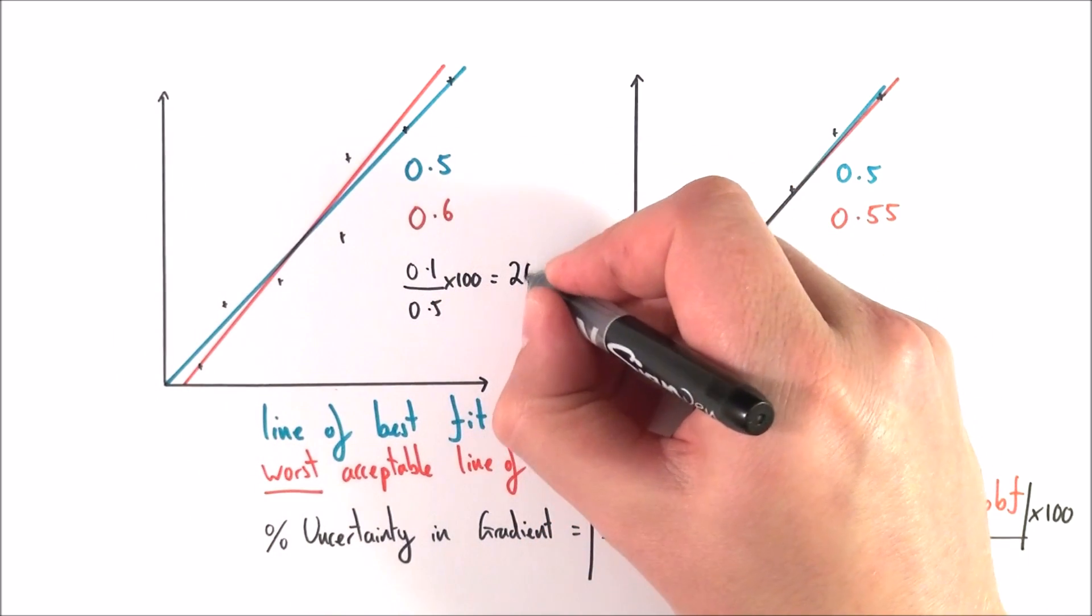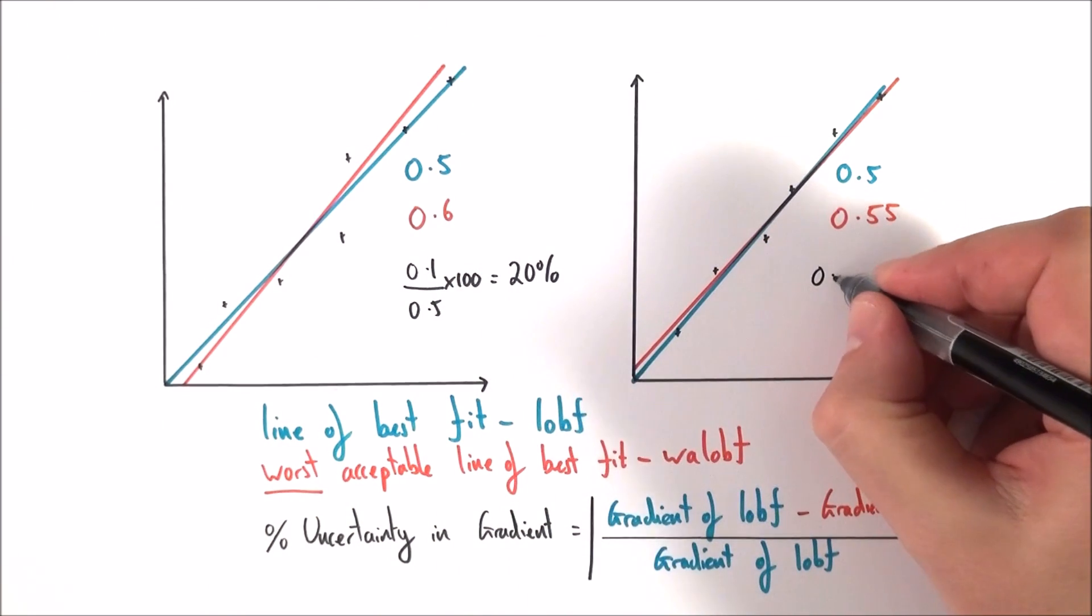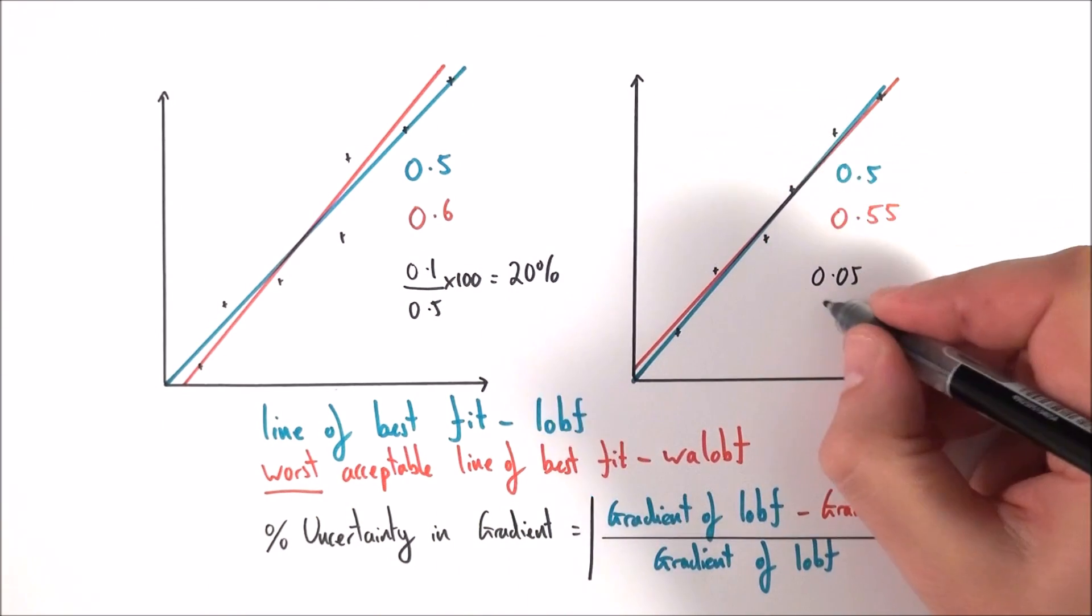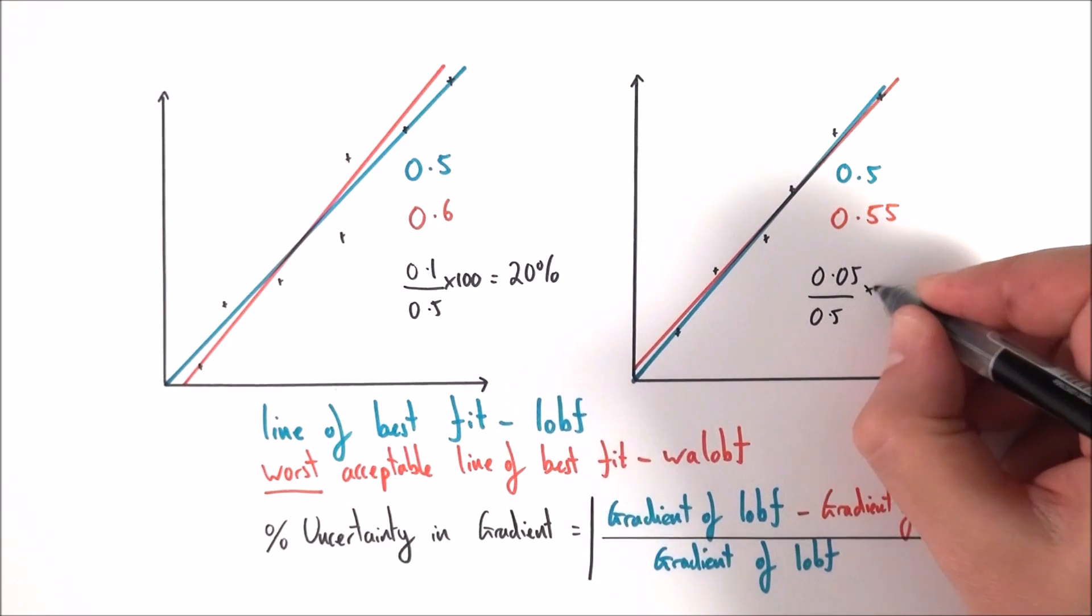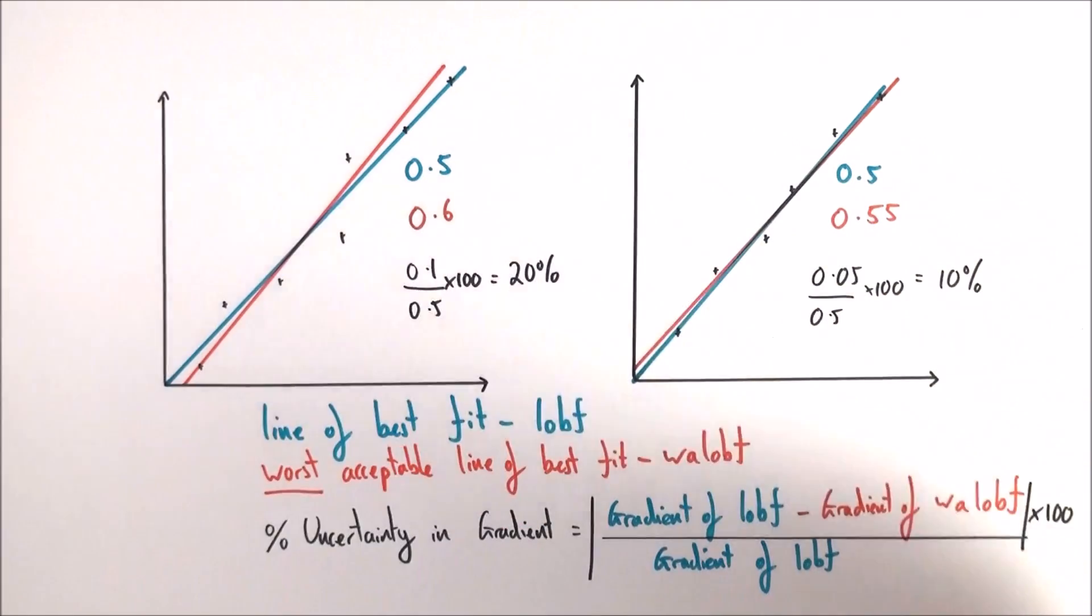In our gradient here, the value is going to be 0.05, which is the difference between the two, over 0.5 times 100, and here the difference is 10%.